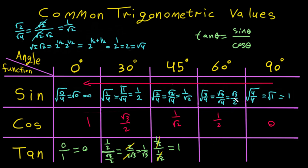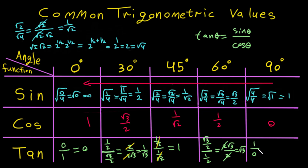For 60 degrees: sine is square root of 3 over 2 and cosine is 1 over 2. Dividing gives square root of 3. For 90 degrees, we have 1 over 0, which is undefined. So the answer for tan 90 degrees is undefined. That's it — see you next time!